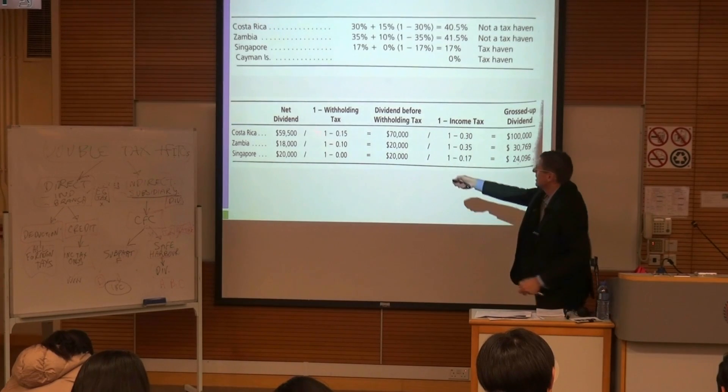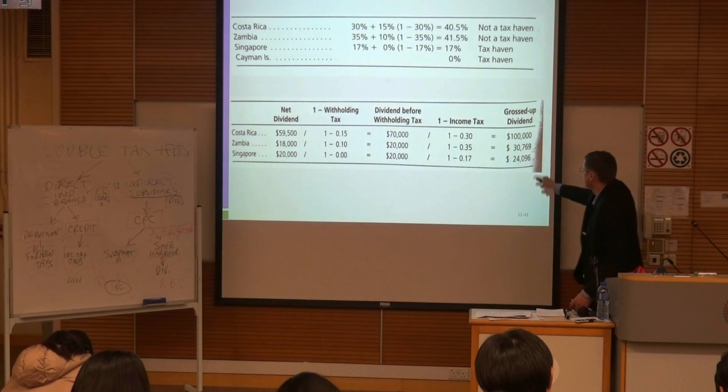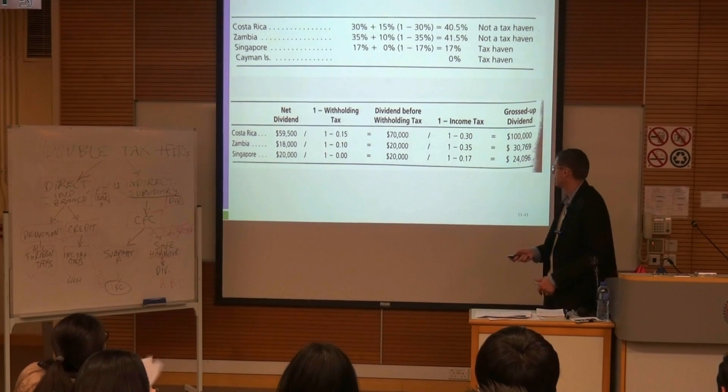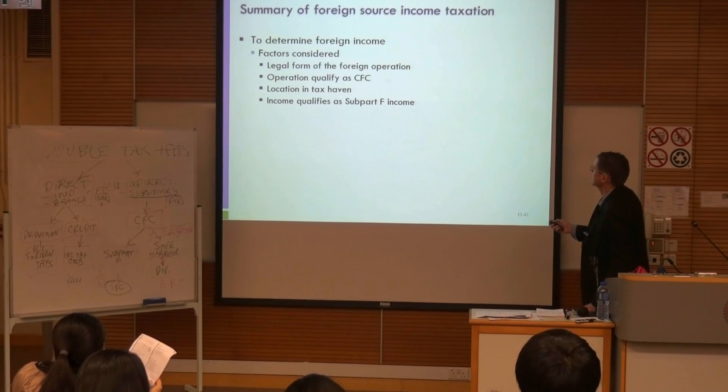Remember this is a whole group so the tax credit will apply to everything. Net dividend, dividend income tax, grossed up dividend. So we've got the grossed up dividend here.